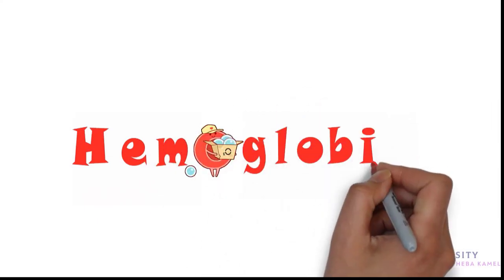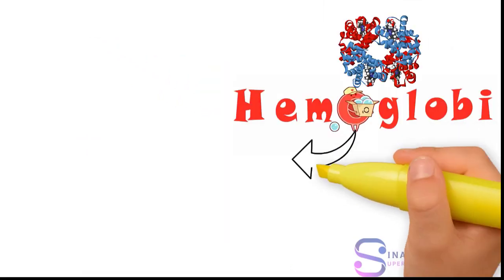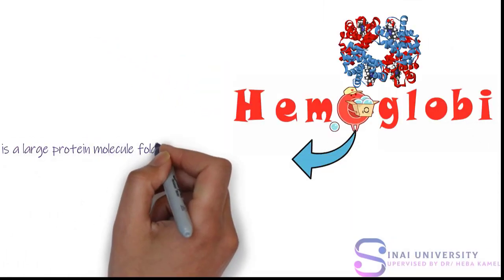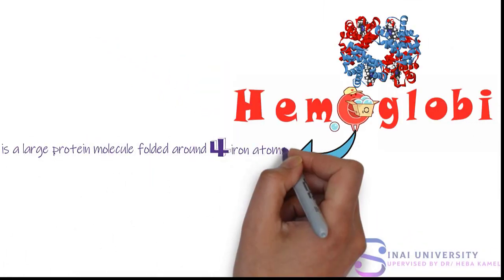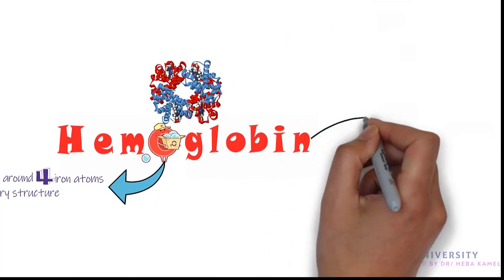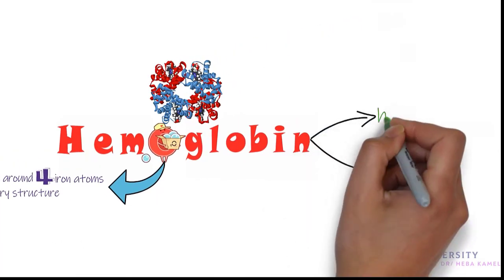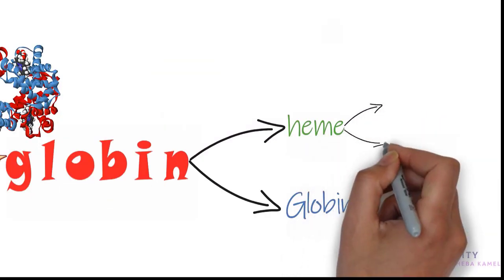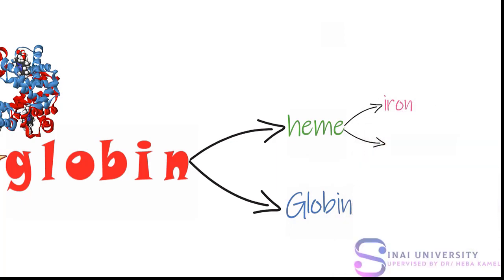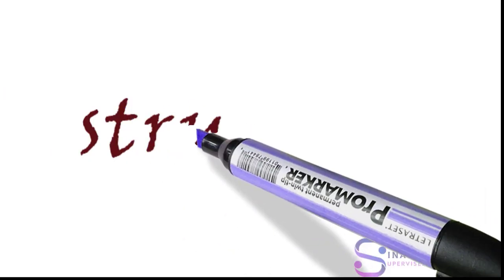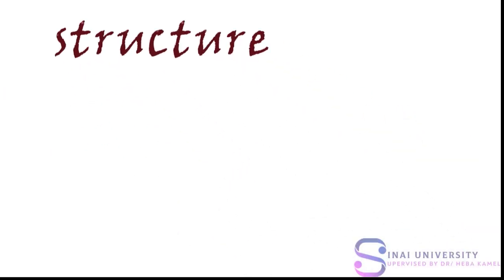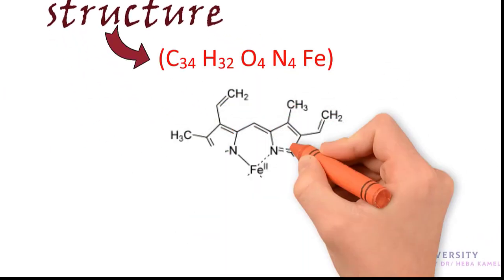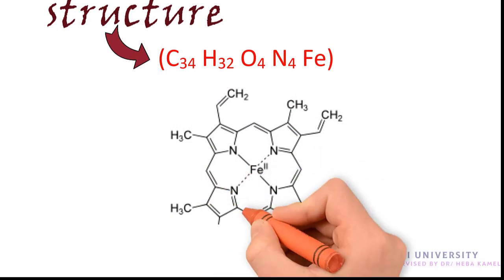Hemoglobin is a large protein molecule folded around four iron atoms. Hemoglobin consists of two parts: the non-protein part called heme and the protein part called globin. Heme is composed of two main elements: iron and protoporphyrin. General structure of hemoglobin: C34H32O4N4Fe.